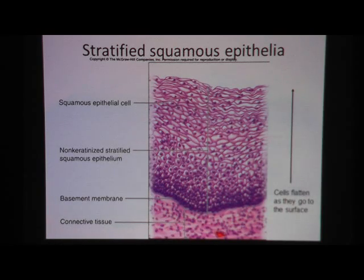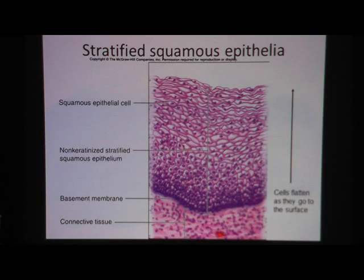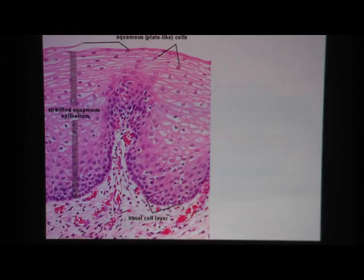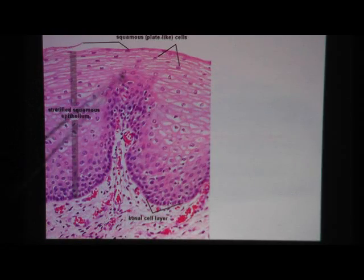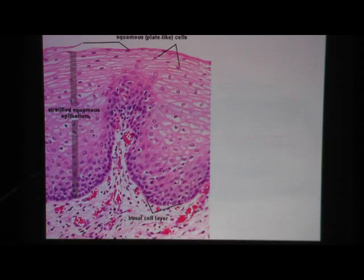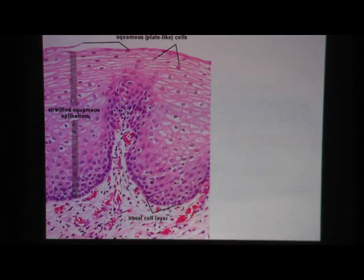This is how you distinguish stratified squamous from transitional epithelium. Remember, with transitional epithelium in the bladder, there tend to be healthy round nuclei throughout the tissue. Here's the look of non-keratinized stratified squamous — this is the esophagus. Notice there are lots of healthy nuclei down here, and as you go toward the top, they start to disappear. Stratified squamous epithelium.